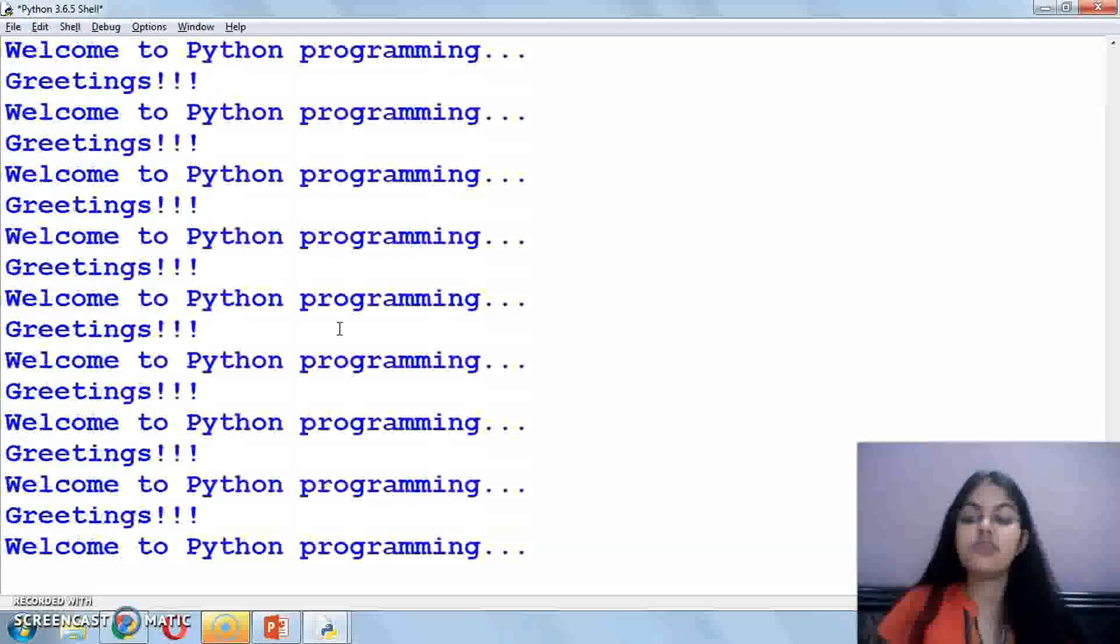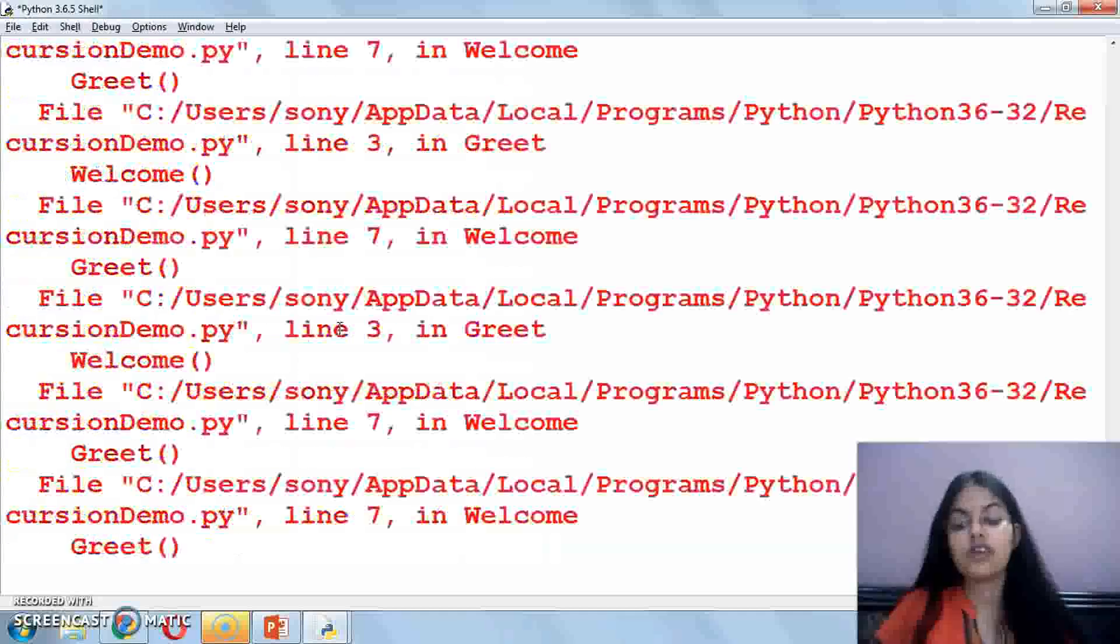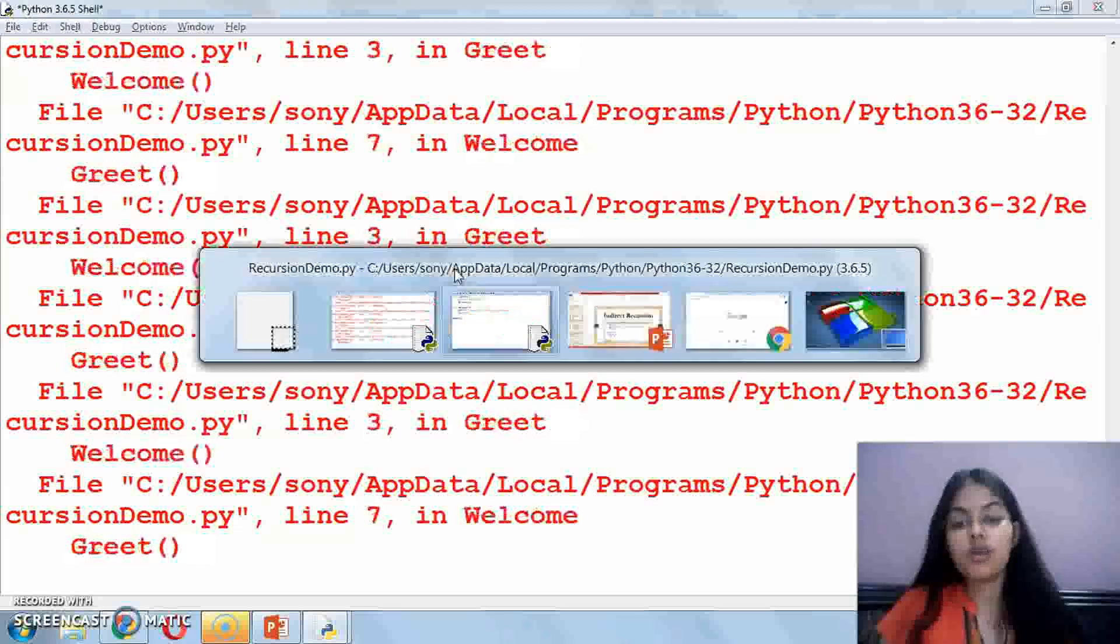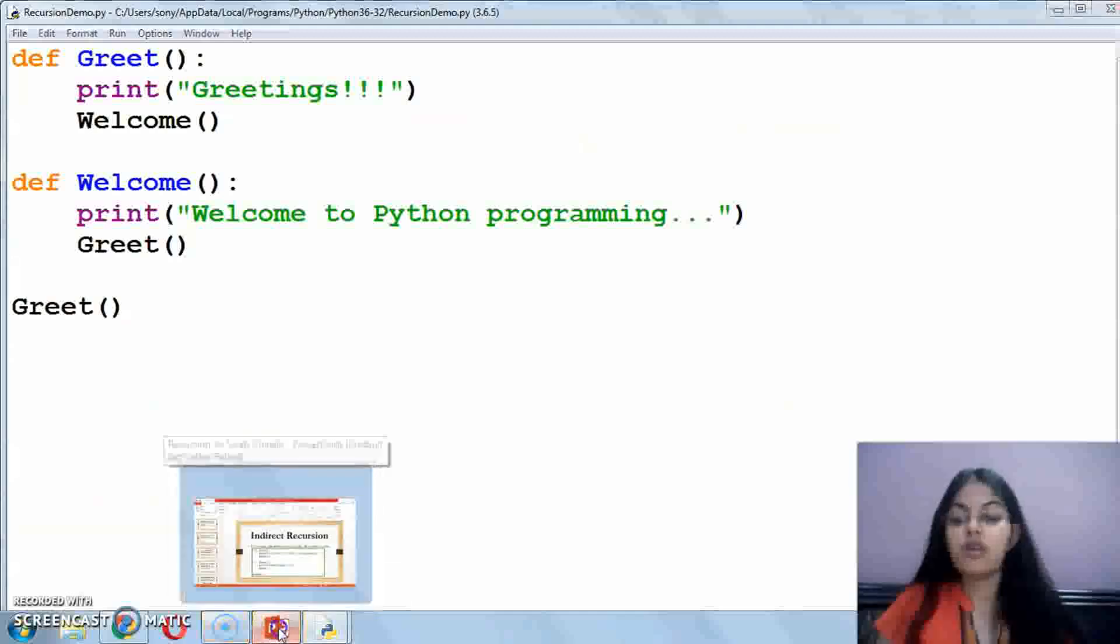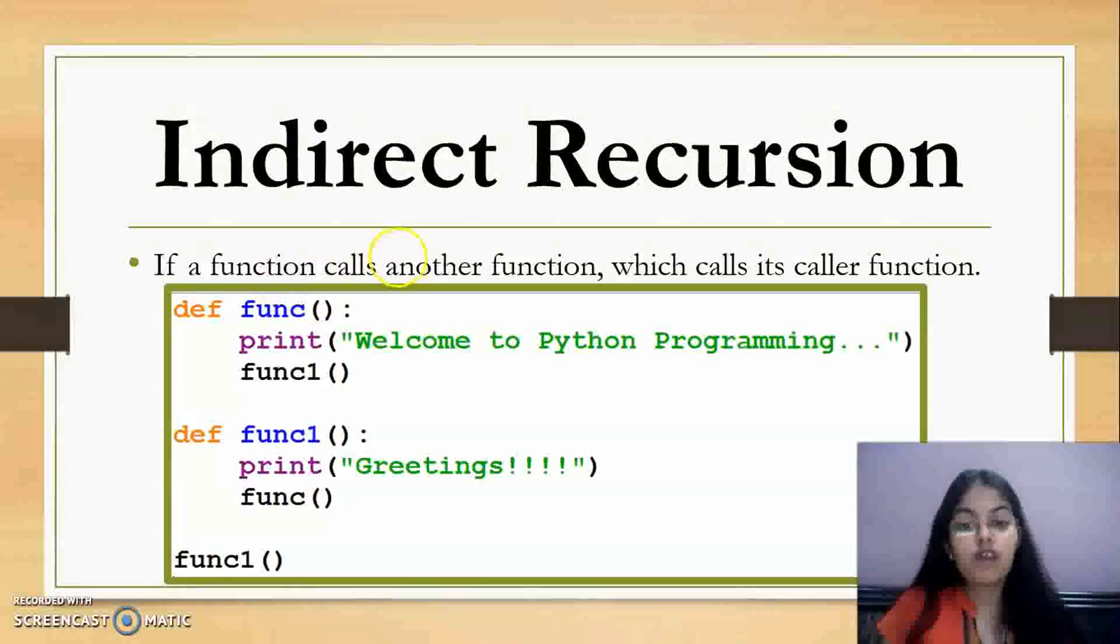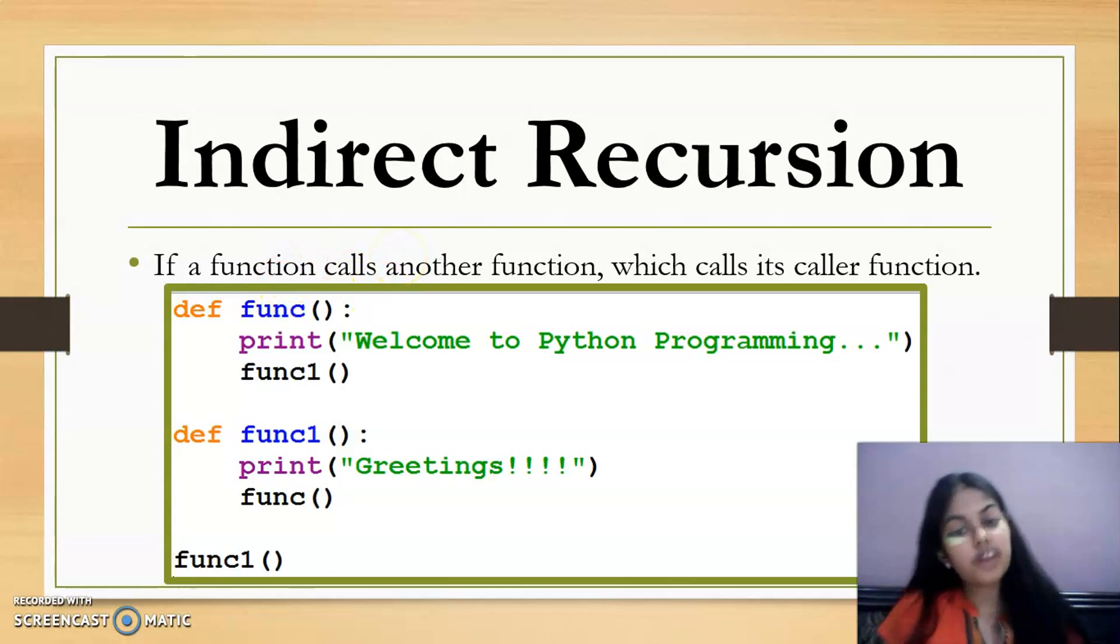This is your recursion process. It will execute until the maximum recursion depth is exceeded. If you want to stop it in between, you can press Control plus C for keyboard interrupt. So this is the example of indirect recursion. Now see the definition. If a function calls another function which calls its caller function, that process is called indirect recursion.